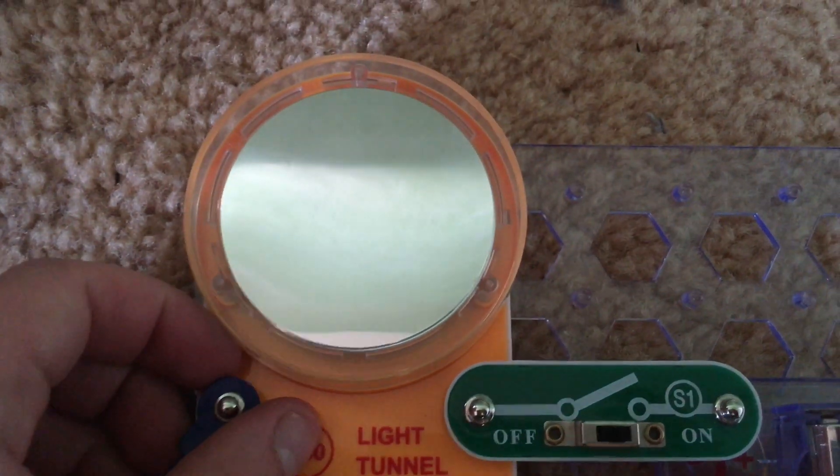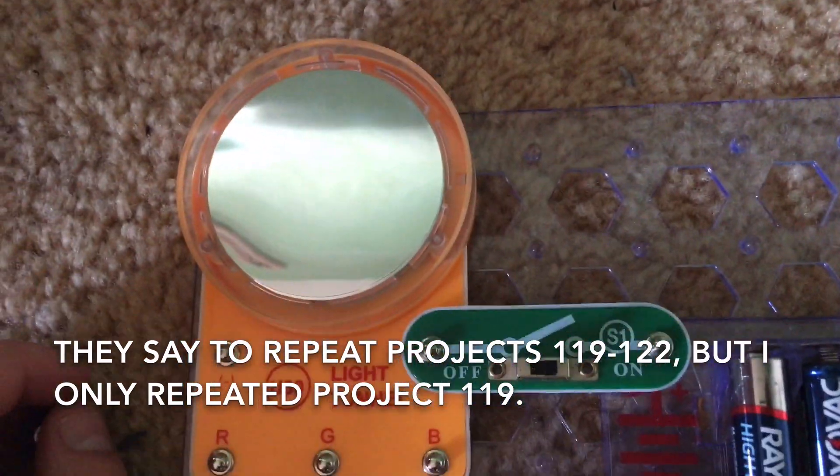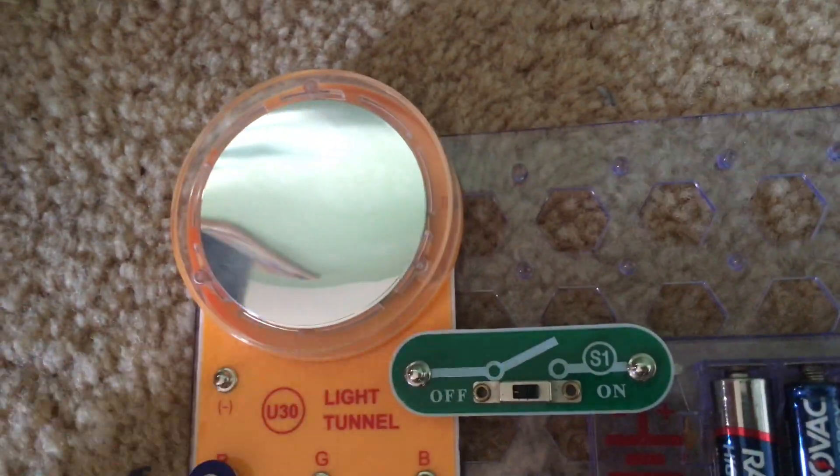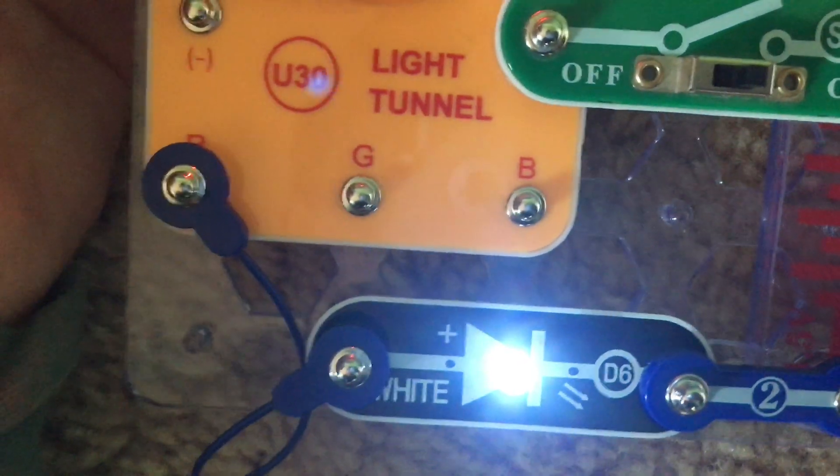For project 123, they say use all the preceding projects starting at 119 but replace the color LED with the white one. Now the LEDs seem more dim because the white LED is brighter and it's using more energy.